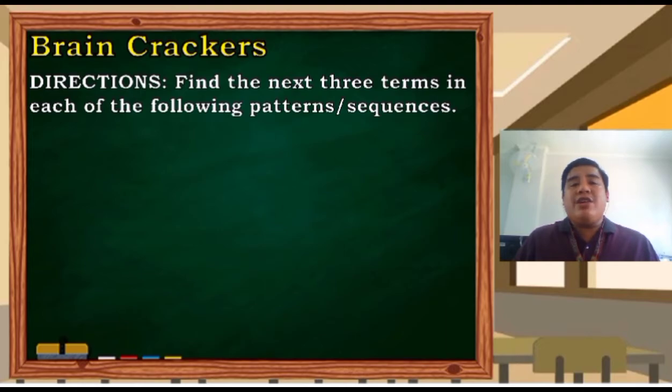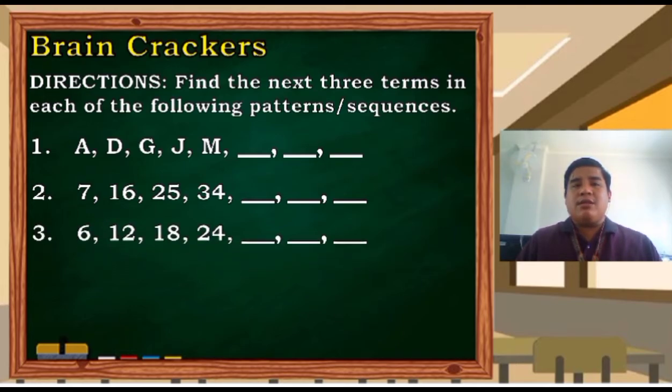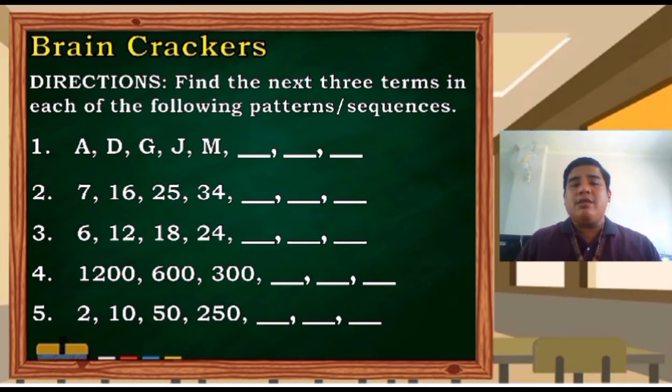For now, your activity is this. Find the next three terms in each of the following patterns or sequences. Number one: A, D, G, J, M. Number two: 7, 16, 25, 34. Number three: 6, 12, 18, 24. Number four: 1200, 600, 300. And number five: 2, 10, 50, 250. So you are given five minutes to accomplish this activity.